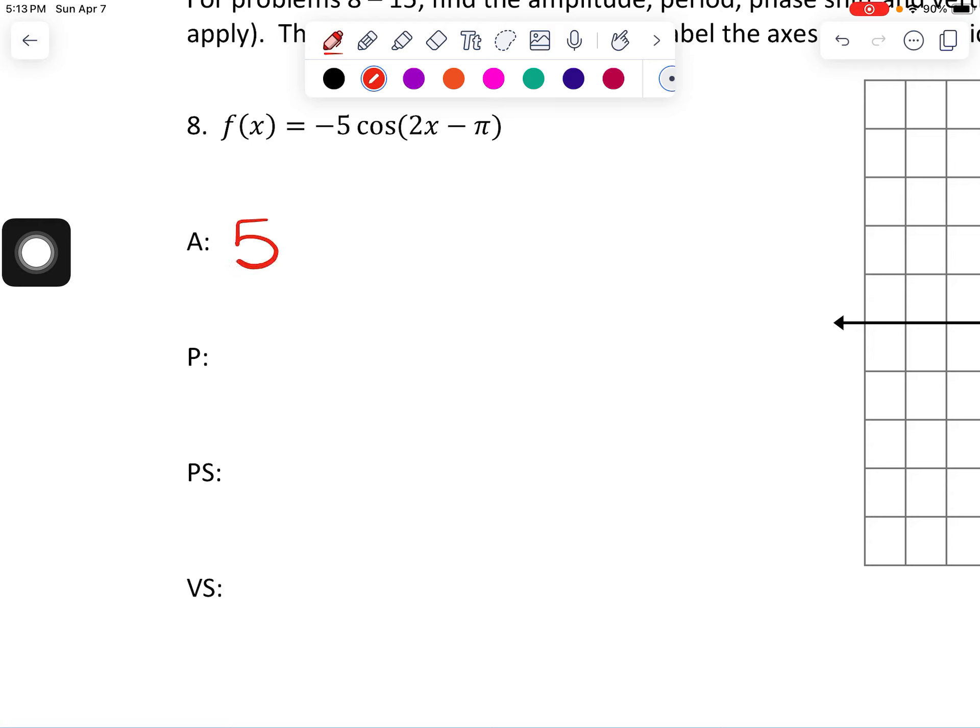So first important bit, my amplitude is going to be 5. And that comes from this value right here. Second important bit is the period. Now, that's going to come from this part. Specifically, the two that's in front. So standard period for cosine is 2 pi. But I'm going to divide by this number in front of x. So 2 pi, that's going to give me a period of pi.